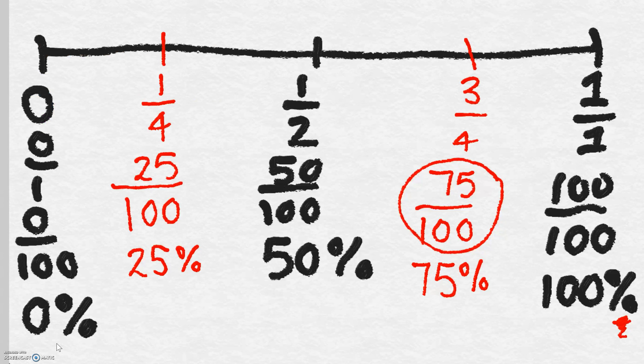So now we have a number line. You can see here we have zero - it is impossible that an event occurs. Over here, it is 100 percent - it is absolutely certain to occur. In the middle here, it is a half chance. Another way to say a half chance would be 50-50, 50 percent, or a half chance.